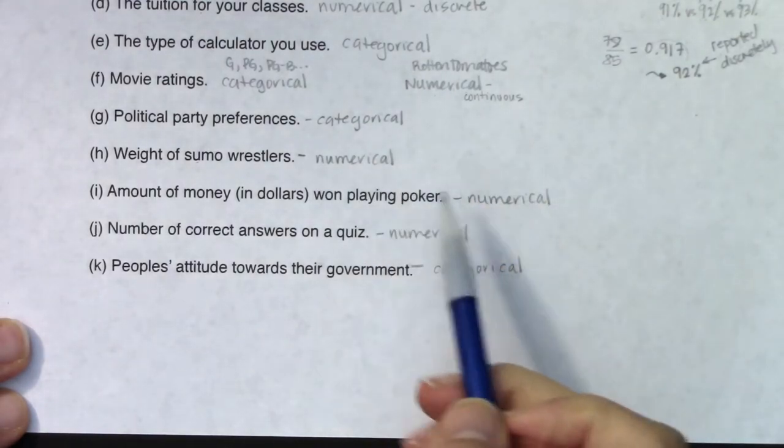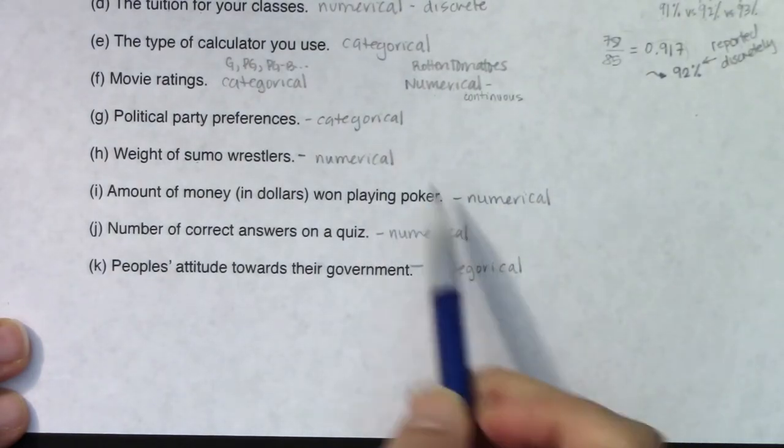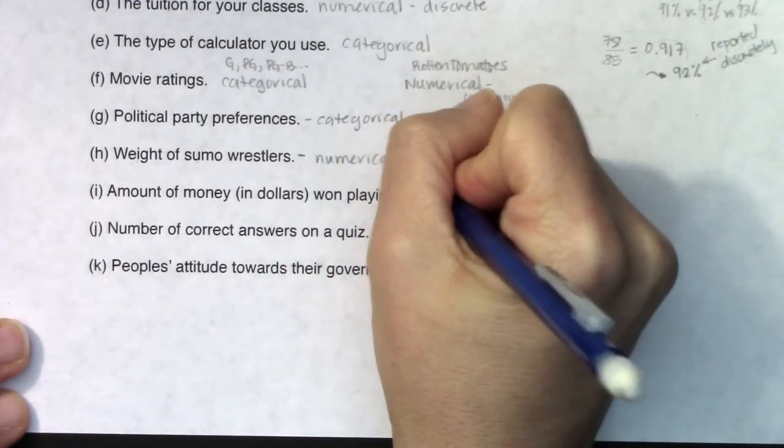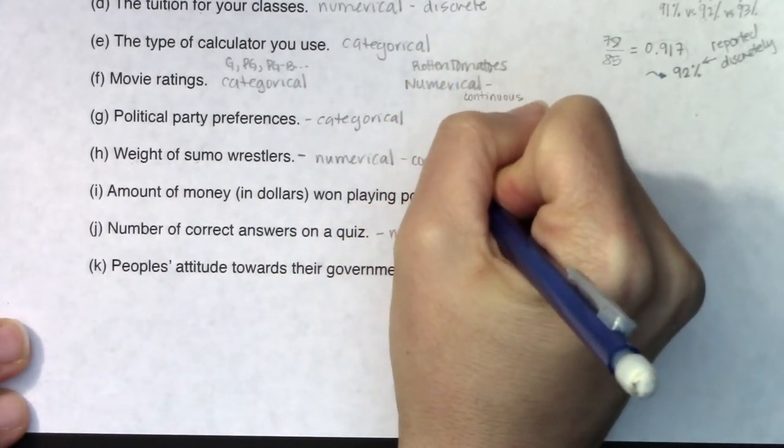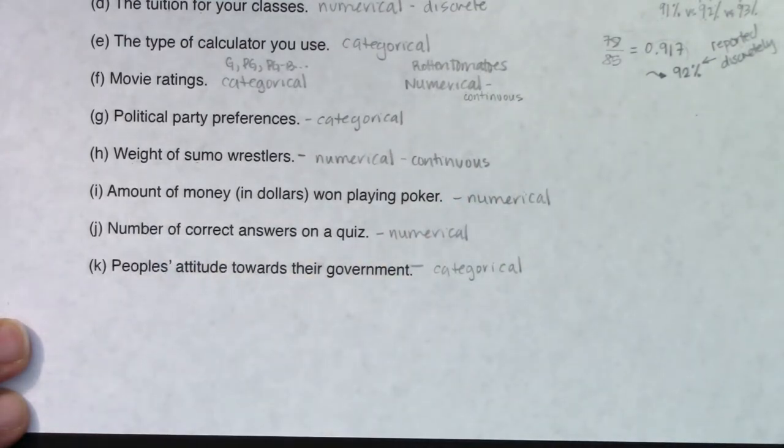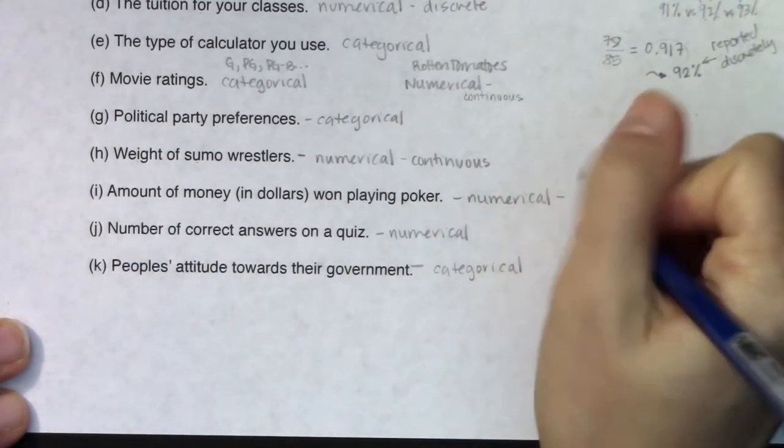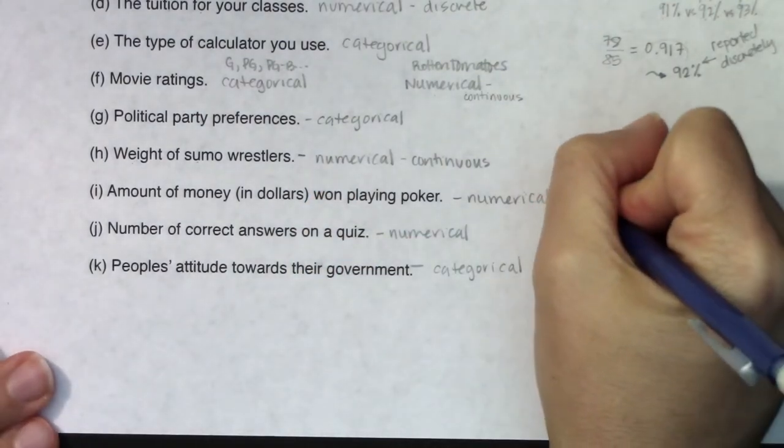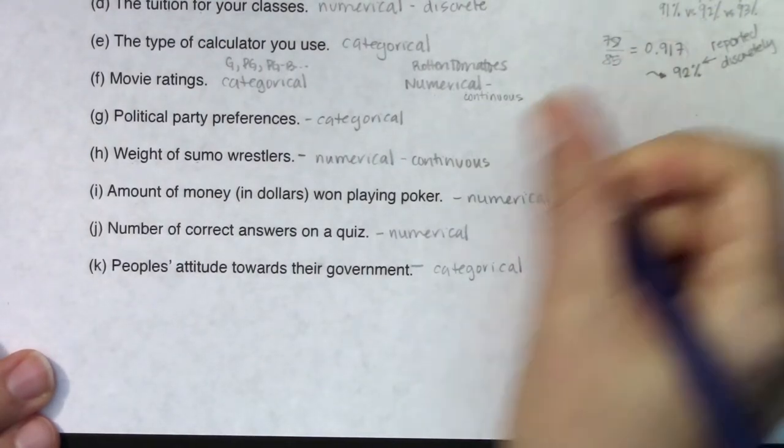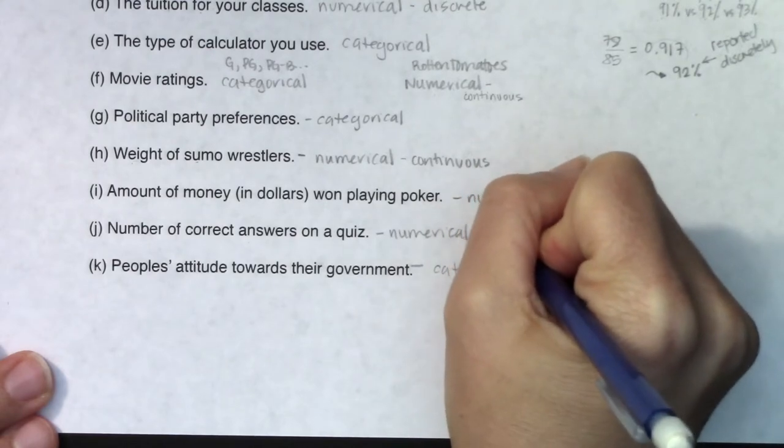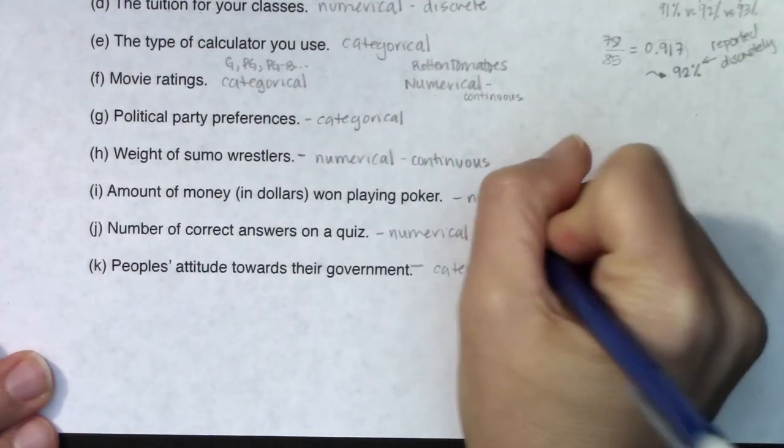Going through here, I have to then break down numerical a little bit further. For weight, I measure my weight, so that would be numerical continuous. I count my money. As I mentioned, Walter White weighs his money, but if I'm playing poker, I'm not making that much money. I'm not very good at it. I count my money, so that would be numerical discrete. The number of correct answers I got on a quiz, I would count that, so that would also be numerical discrete.